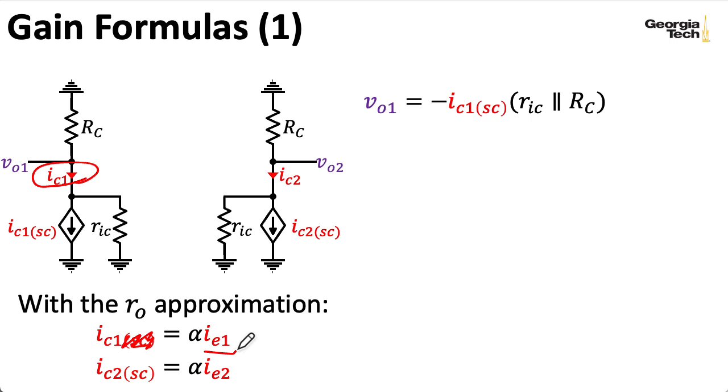Under the approximations that Marshall is using, we wind up with the setup where multiplying alpha by IE1 gives us this IC1 with the SC in parentheses here. It's this current source here that's in parallel with our IC.